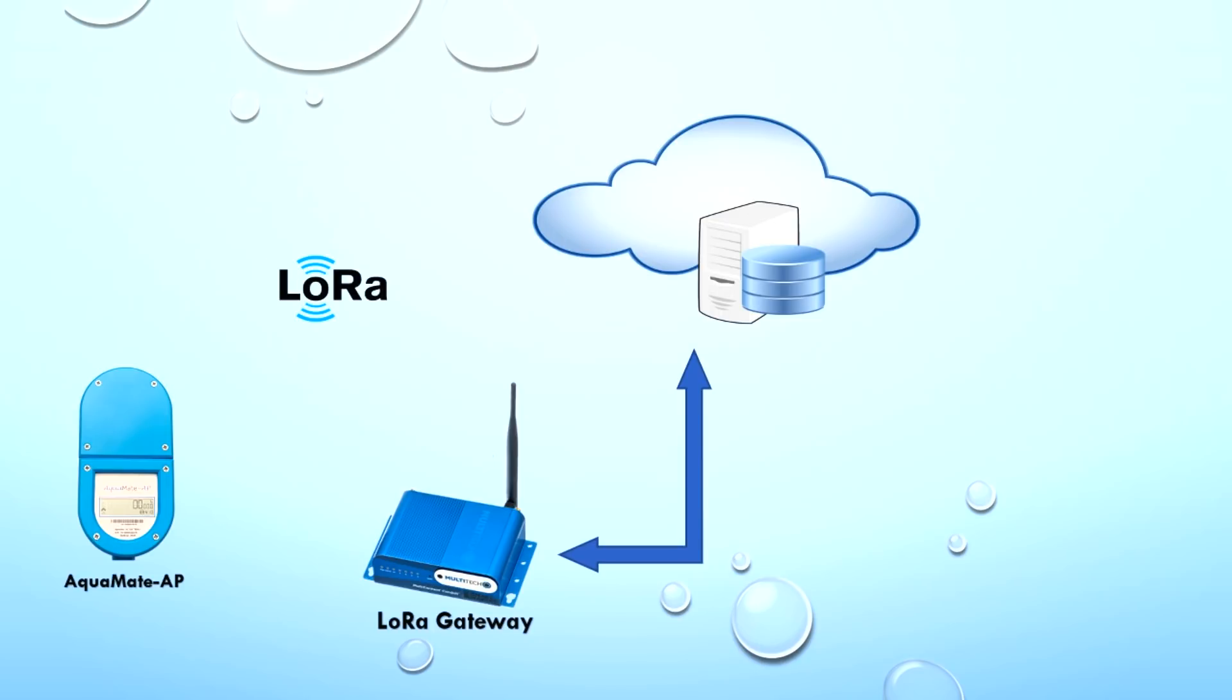Aquamate AP is configured to send data at regular time intervals to the cloud. The LoRa communication is bi-directional, meaning that the data goes from smart meter to the cloud data server and the instructions can be sent from cloud data server to the smart meter.